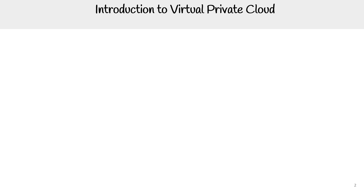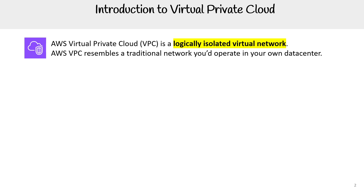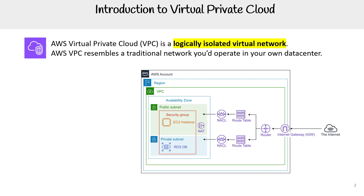Hey, this is Andrew Brown, and we are taking a look at AWS Virtual Private Cloud, also known as VPC. This is a logically isolated virtual network. AWS VPC resembles a traditional network that you'd operate in your own data center, but it's a lot more easily done since you're not managing all that hardware and infrastructure underneath, and some things are simplified or abstracted away to make your life a lot easier.